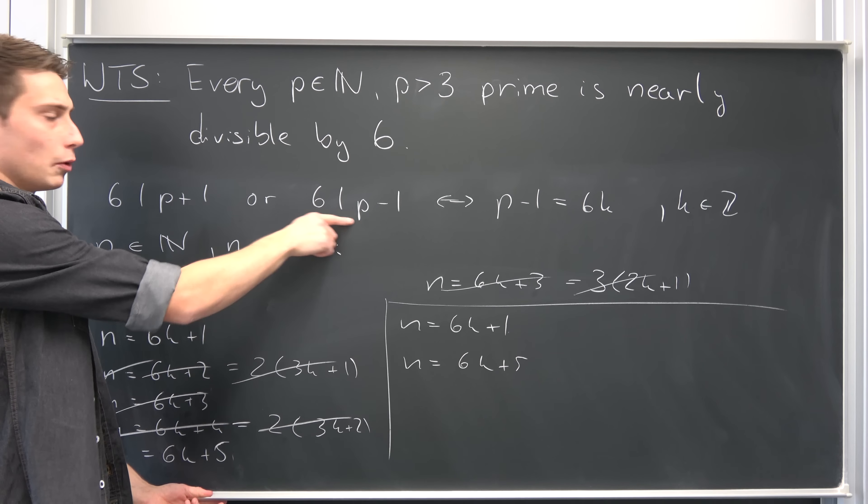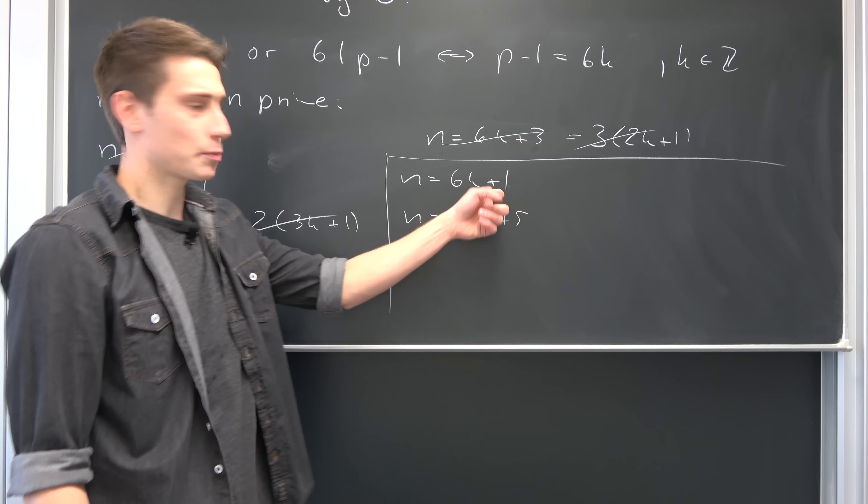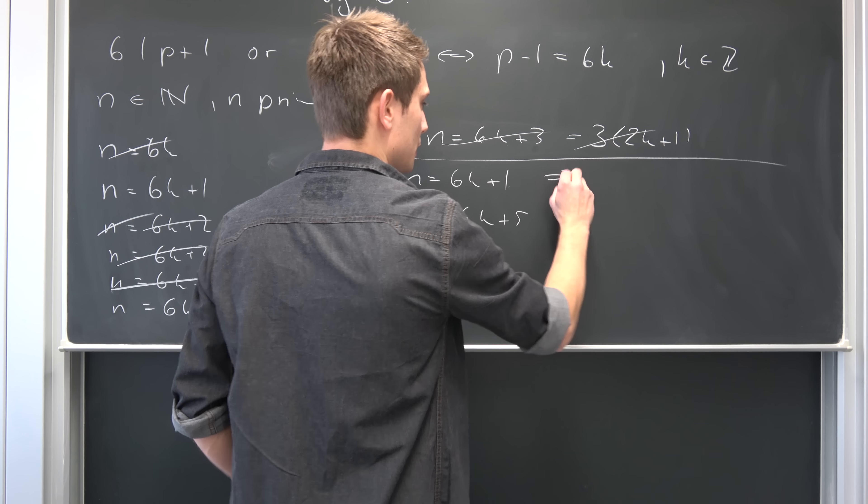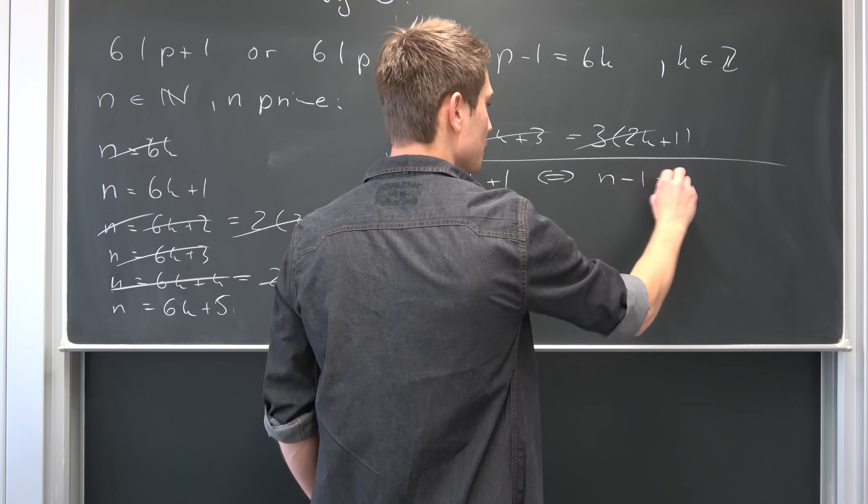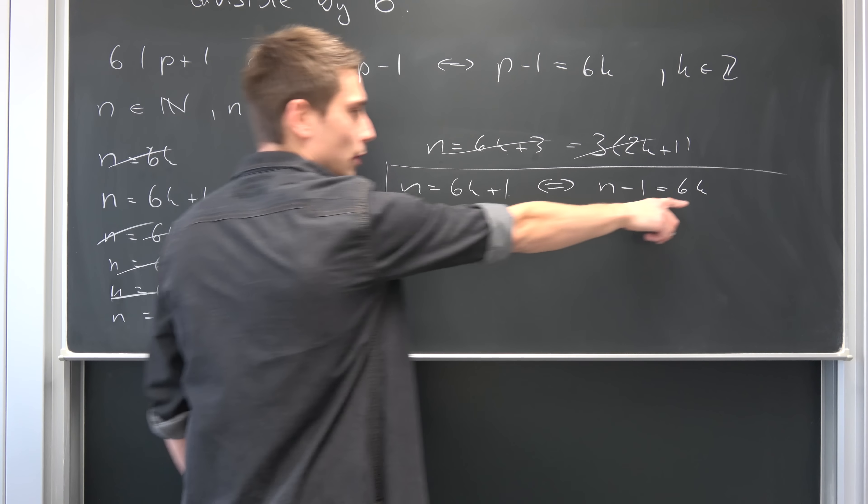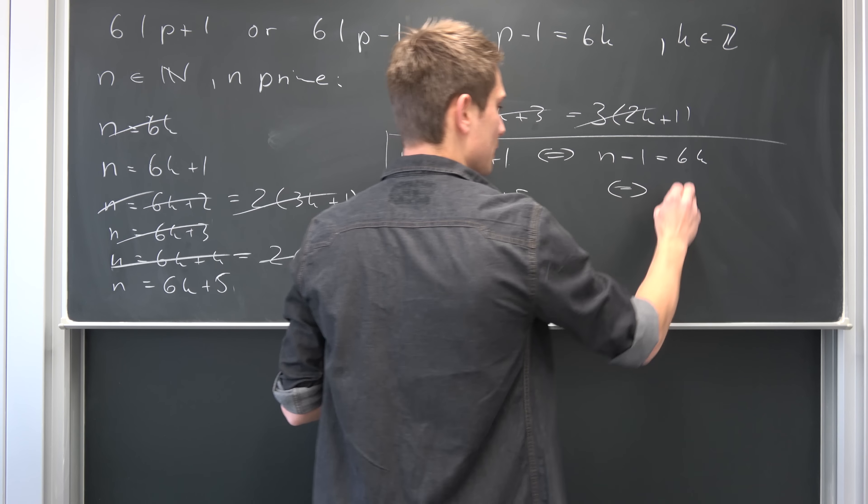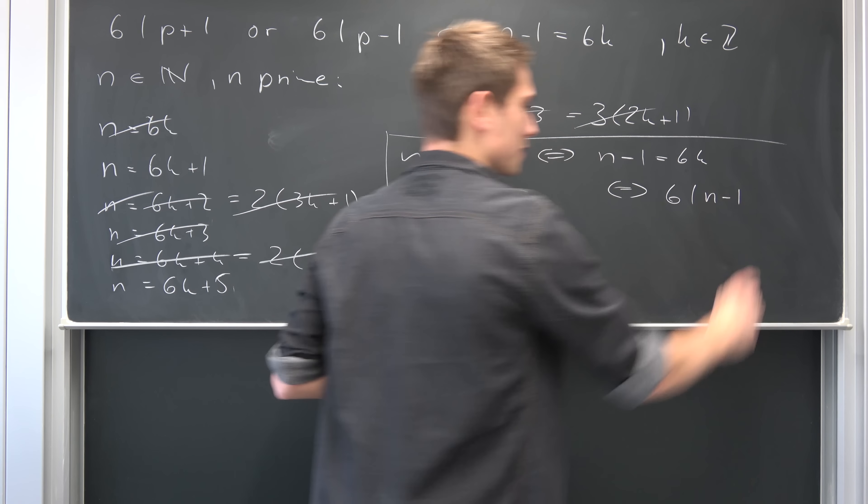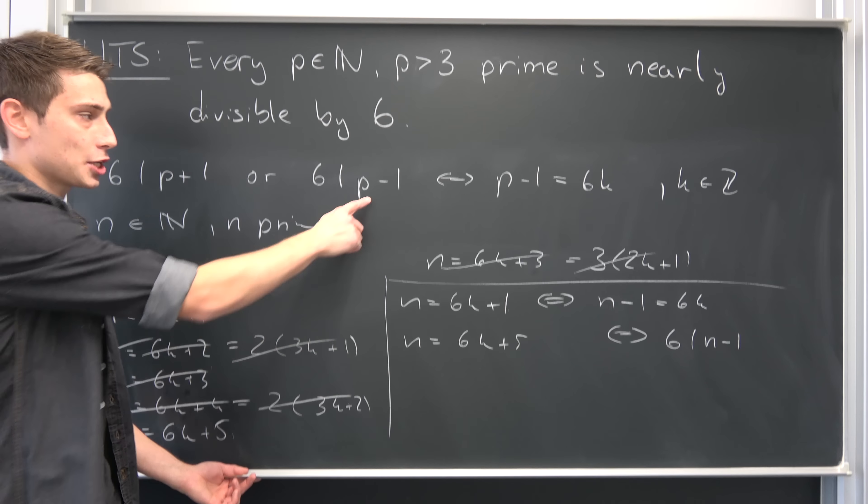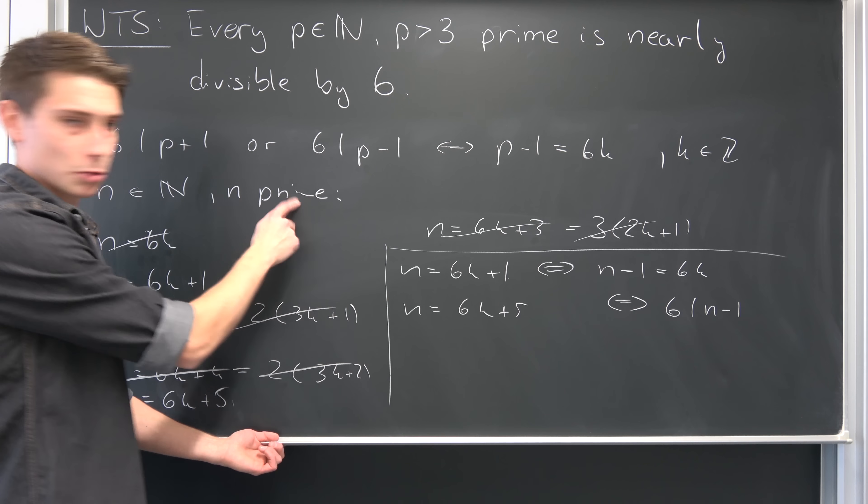Now we want to go back to our original statement. Why not subtract 1 on this first one? That means n minus 1 equals 6k plus 1 minus 1. This is just 0, so we have 6k, meaning equivalently that 6 divides n minus 1, where our n is just p now. We can interpret this as a prime number. That was our restriction.